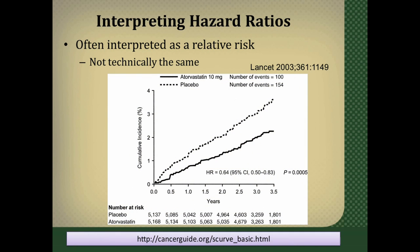This is a results figure of the primary outcome of the ASCOT LLA trial. The primary outcome was nonfatal MI or fatal cardiovascular disease, and that's what's being plotted over time. In this particular study, patients were randomized to atorvastatin or to placebo. Along the bottom is time from when people were enrolled in the study and began being followed, and the study ended at about three and a half years.